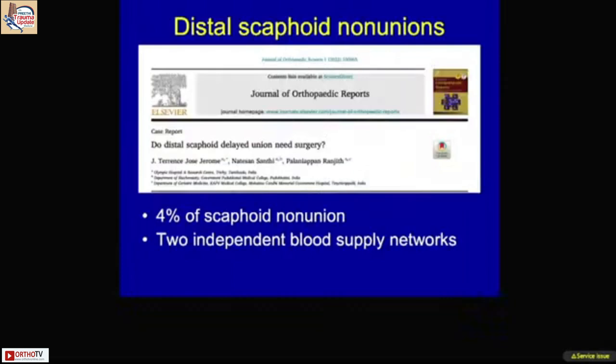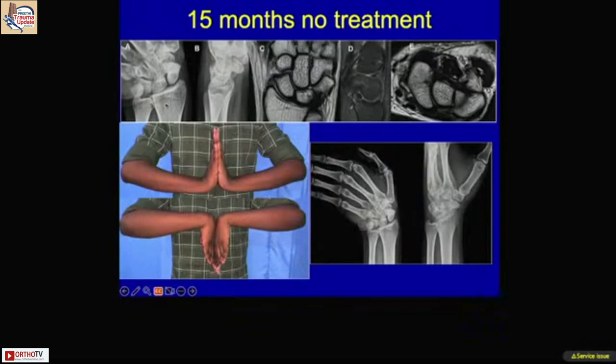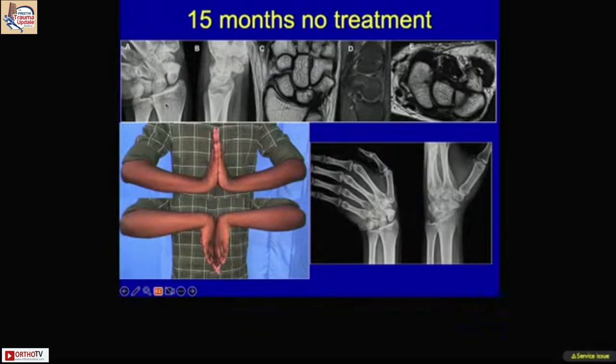The last point is that distal scaphoid non-union is rare but reported. We have a series of these cases. A medical student presented with distal scaphoid non-union showing fragmentation, collapse, and deformity. We placed the patient on conservative management, and this healed well.